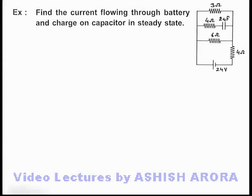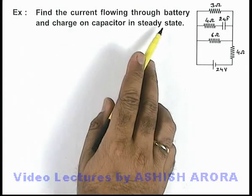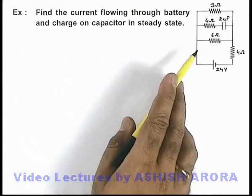In this example, we are required to find the current flowing through the battery and charge on capacitor in steady state.